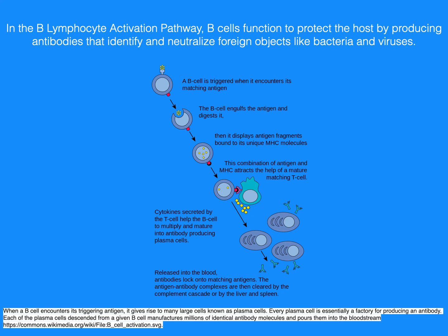In the B-lymphocyte activation pathway, B-cells function to protect the host by producing antibodies that identify and neutralize foreign objects like bacteria and viruses. When a B-cell encounters its triggering antigen, it gives rise to many large cells known as plasma cells. Every plasma cell is essentially a factory for producing an antibody. Each plasma cell descended from a given B-cell manufactures millions of identical antibody molecules and pours them into the bloodstream.